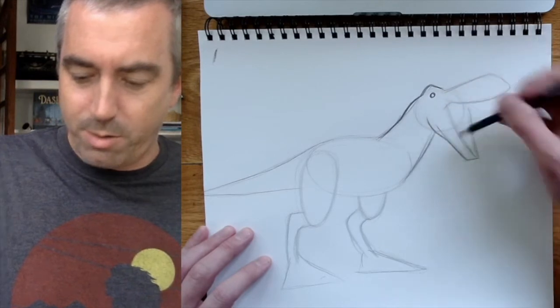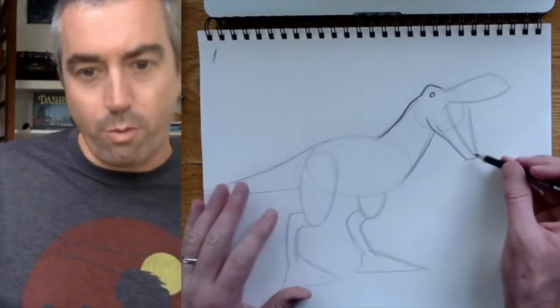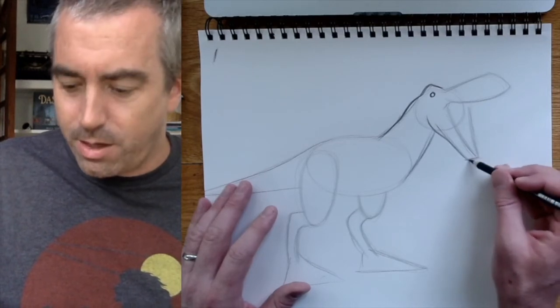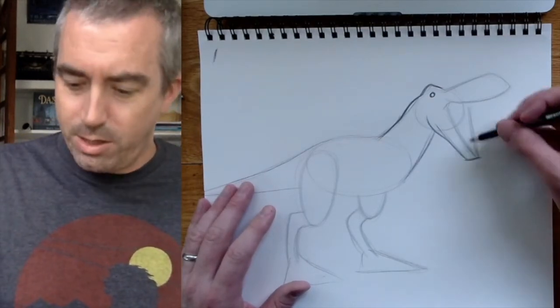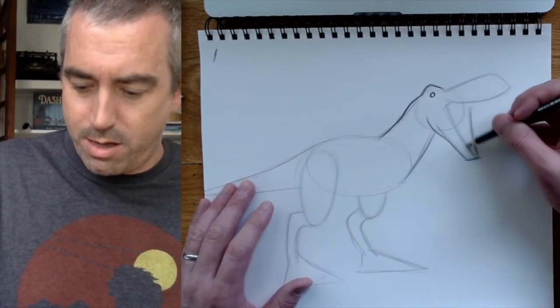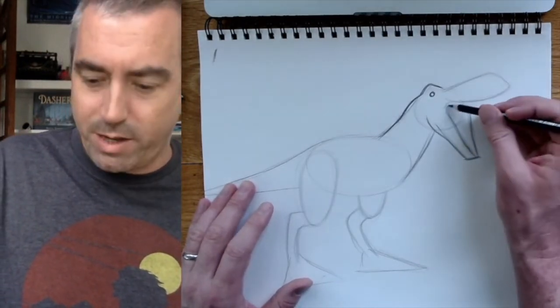So you start out with all these kind of scribbly lines where you're kind of searching for where the line should be. And then you can lock it in once you know. So now we have this big open mouth. Let's see, maybe we can draw some teeth. We'll get into some details now.